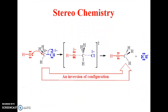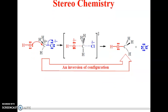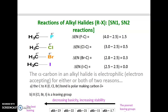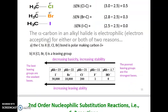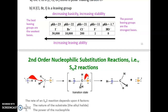In stereo chemistry, there is an inversion of configuration called Walden inversion. For SN1 and SN2 reactions, consider CH₃F and the electronegativities. The alpha carbon in alkyl halides is electrophilic — electron accepting. In SN2 reactions, the transition state and formation of products show decreasing basicity, increasing stability, and increasing leaving ability.